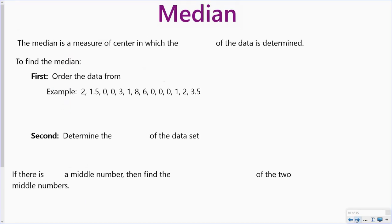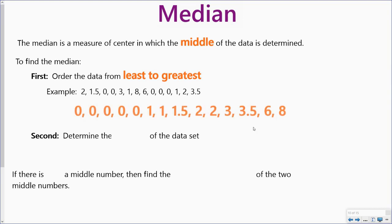Next I'm going to look at the median. The median is the measure of center in which the middle of the data is determined. To find the median, first I'm going to order my data from least to greatest. When I do that with this data set, I come up with this list.